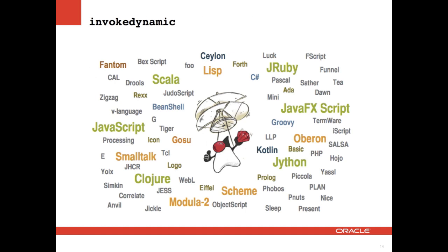InvokeDynamic, as I mentioned, isn't really meant to be used by Java the language. It's really for all those languages — and there are new ones coming out almost every month — running on the JVM, which can use some help when it comes to performance and the facility of implementing their favorite language on top of the JVM. That's really what InvokeDynamic is meant for.